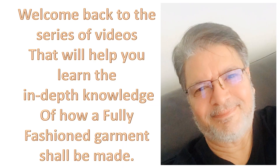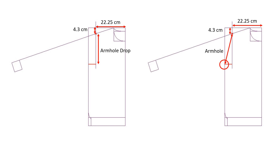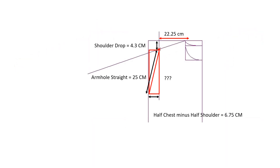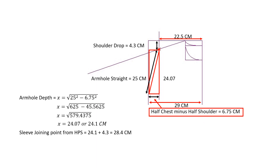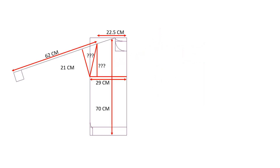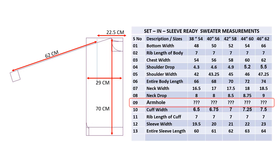Dear friends, welcome back to yet another video on everything you wanted to know about fully fashion knitting. In the last video we discussed how to get to know where the sleeve will join the main body if the armhole measurement is provided. In this video we will discuss how to determine the point where the sleeve will join the main body when armhole measurement is not given but only sleeve width is given.